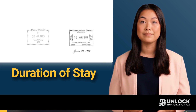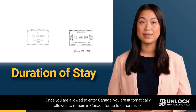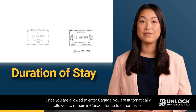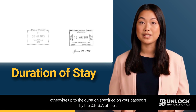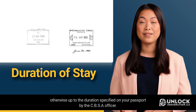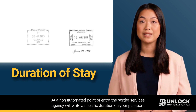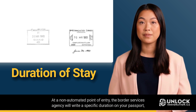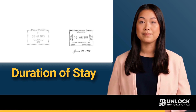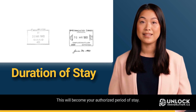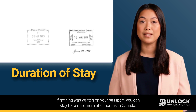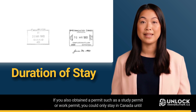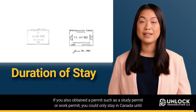Once you are allowed to enter Canada, you are automatically allowed to remain for up to six months, or otherwise up to the duration specified on your passport by the CBSA officer. At a non-automated point of entry, the Border Services Agency will write a specific duration on your passport, with or without the entry stamp, which becomes your authorized period of stay. If nothing was written on your passport, you can stay for a maximum of six months. If you obtained a permit such as a study permit or work permit, you could only stay until the expiry of that permit.